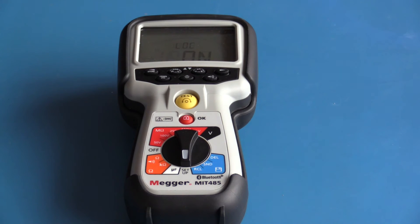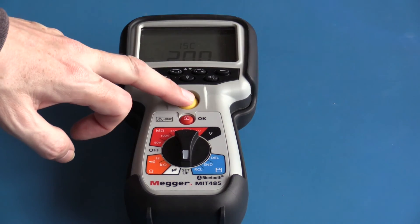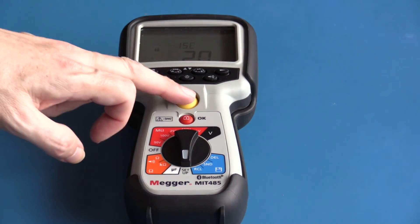This sets the measurement current that will be used when making resistance measurements. I currently have it set to 200 milliamps. It can be cycled through 20 milliamps and 200 milliamps.